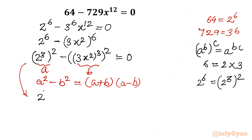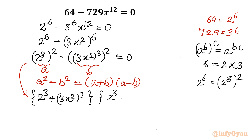After applying the difference of squares formula, it becomes (2³ + (3x²)³) times (2³ − (3x²)³) equal to 0.